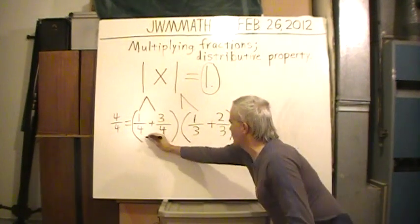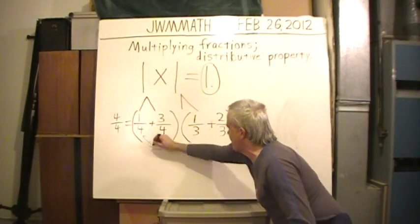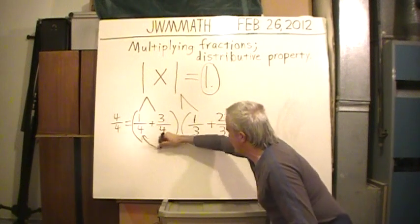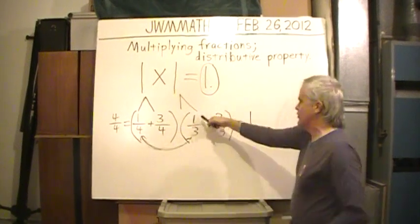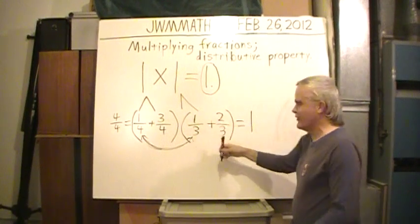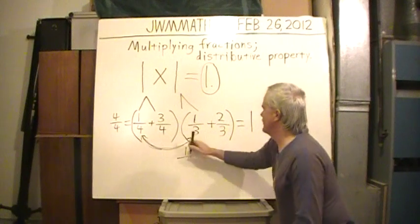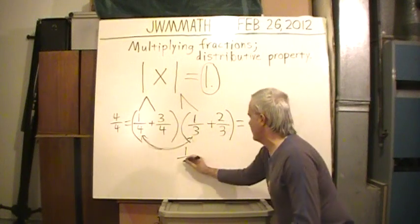Alright. 1/4 times 1/3. Multiply the first item in each parenthesis. 1/4 times 1/3. Multiply the fractions. Multiply the numerators and denominators. 1 times 1 is 1. And the 4 times the 3 is 12.